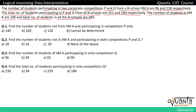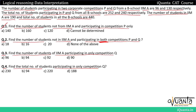The questions are: find the number of students not from IMA participating in competition P only; find the number of students not in IMA participating in both P and Q; find the number of IMA students participating in only Q; and find the total number of students participating in only Q. Let us go to the next slide and solve the first question.